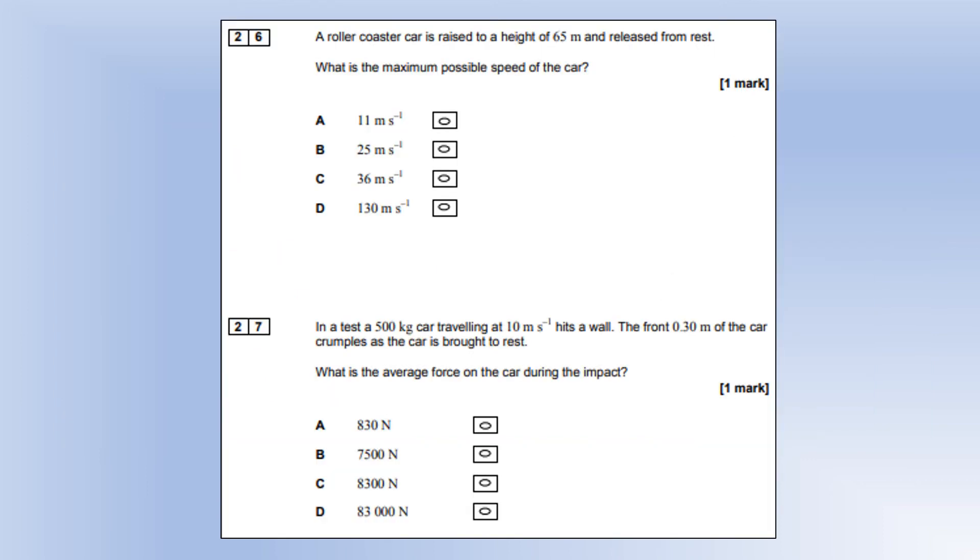A roller coaster car is raised to a height of 65 meters and released. What is the maximum possible speed? The maximum speed will be if all of its GPE is turned into kinetic energy and we can plug the values in and we get 36. That's the answer.